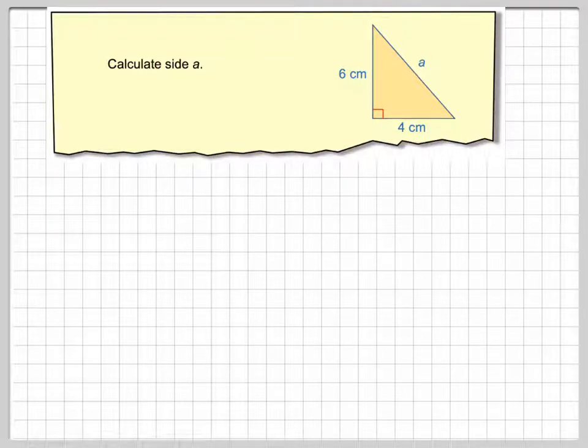Right, what we're going to do in this video is use Pythagoras' theorem in the two cases that we normally have to do. It says here, calculate the side A, so this is the side A here of a right-angled triangle.